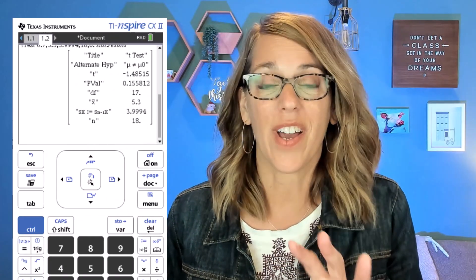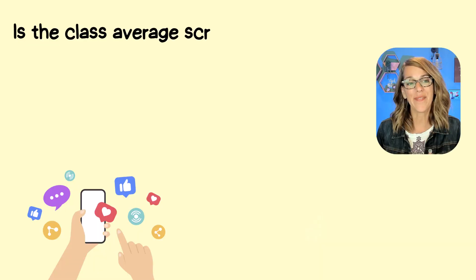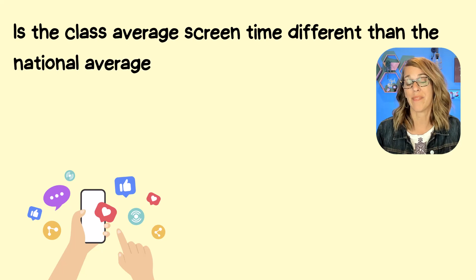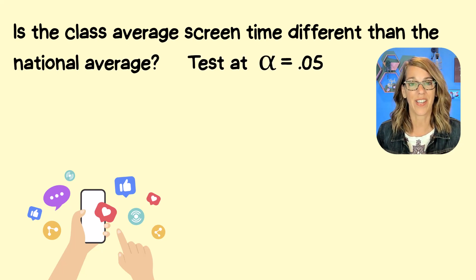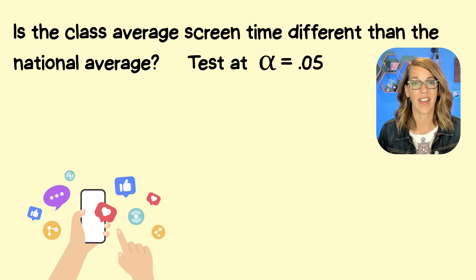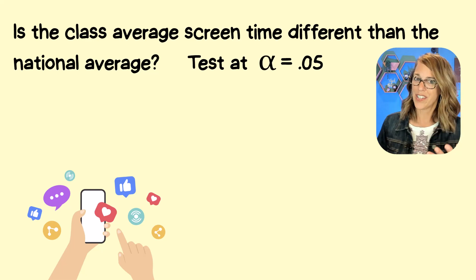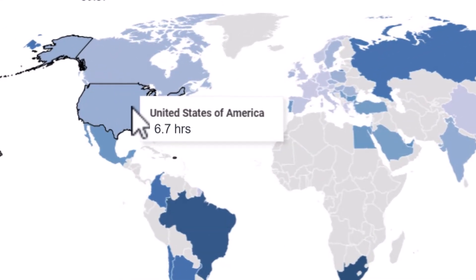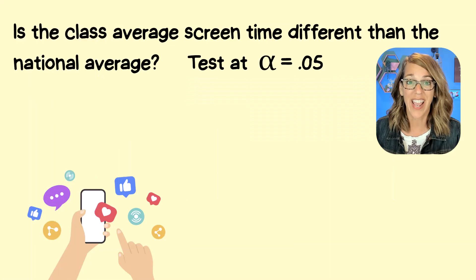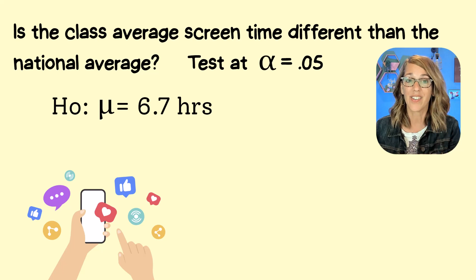The TI-Nspire does a great job with t-tests of the mean like this one. We want to know if the class average screen time is different than the national average. We'll be testing this at alpha equals 0.05. The national average is 6.7 hours per day, which gives us our null hypothesis.